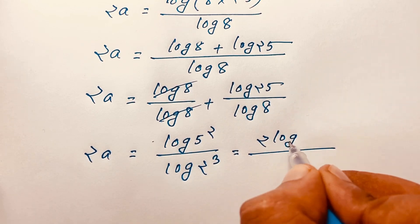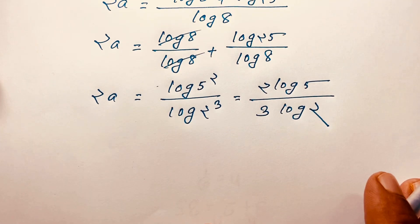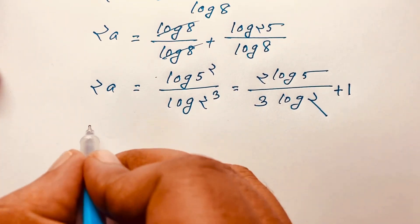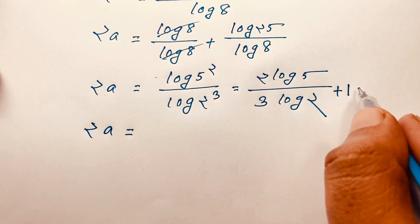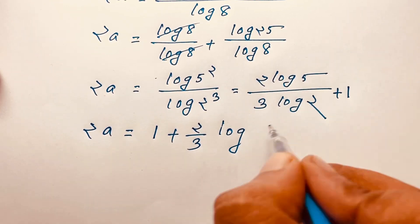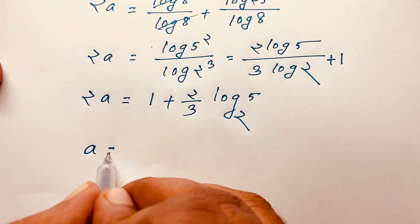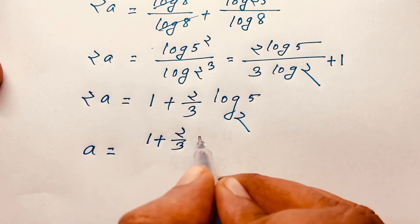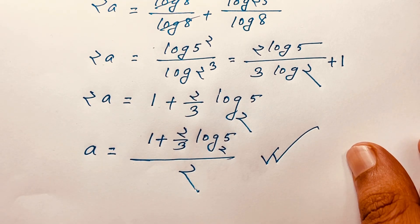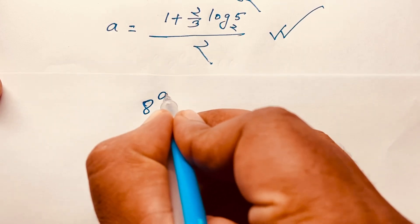So 2a equals 1 + (2/3)·log₂5. Dividing both sides by 2, we find a equals [1 + (2/3)·log₂5] / 2. This is the value of a in this exponential expression.